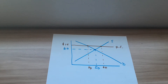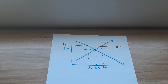In this video for AP Microeconomics students, we're looking at the consumer and producer surplus when it comes to a price floor and a price ceiling. A price ceiling is the highest price allowed by the law, and a price floor is the lowest price allowed by the law.